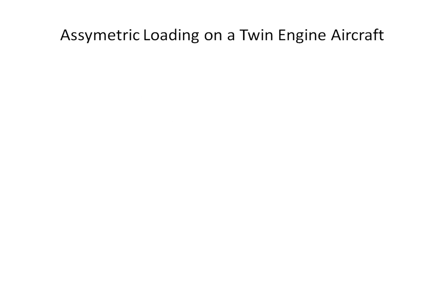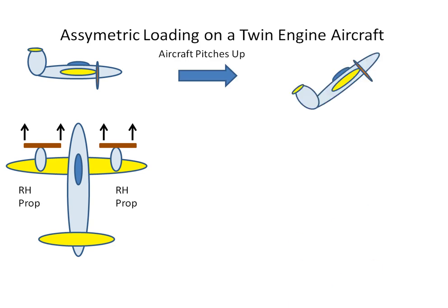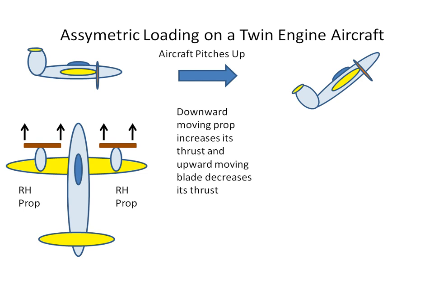Now let's see how this affects a twin-engine aircraft. Assuming a twin-engine aircraft flying straight and level with two right-hand propellers, each blade will be producing an equal amount of thrust. If the aircraft pitches up, the downward-moving prop increases its thrust and the upward-moving blade will decrease its thrust.